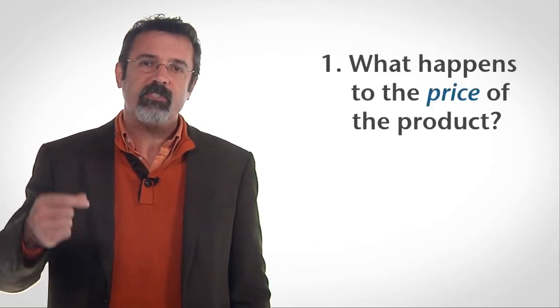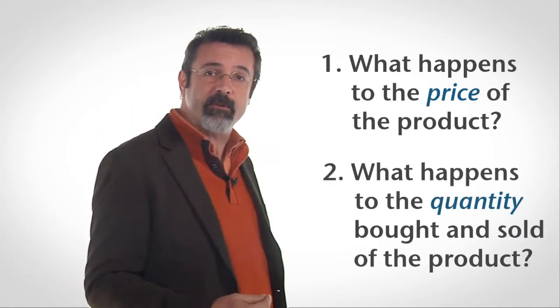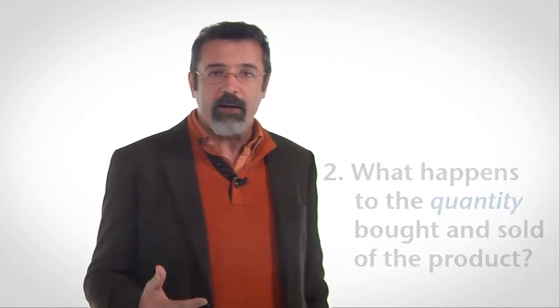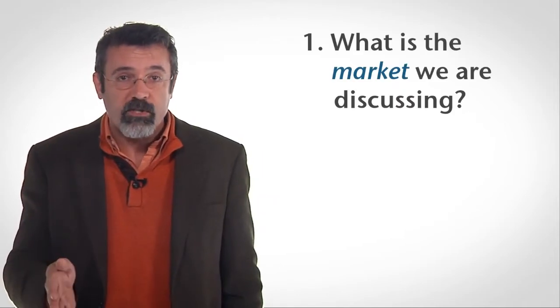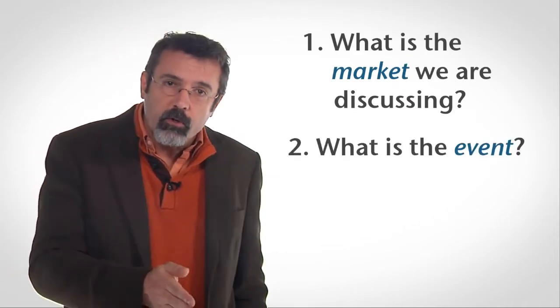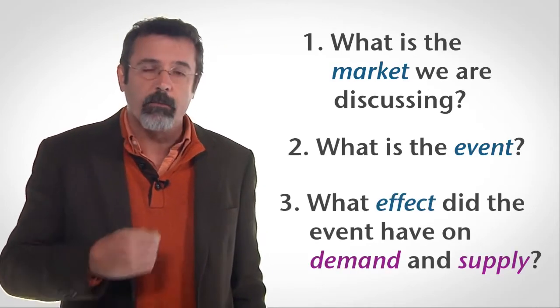Let's return to the two questions economists care about. First, when an event impacts a market, what happens to the price of the product? Second, when an event impacts a market, what happens to the quantity bought and sold of the product? To unravel what happens in a market, answer the following questions: First, what is the market we're discussing? Second, what is the event? Third, what effect did the event have on demand and supply in the market we're discussing?